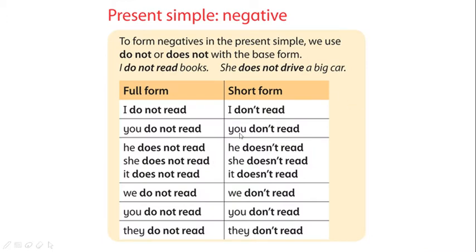Now the negative form — that means we need to put 'not' into the sentence. For I, you, we, they: if we want to change from affirmative to negative, we add 'do not'. So: I do not read, you do not read, we do not read, they do not read. For he, she, it: we have to say 'does not'. Does not read.